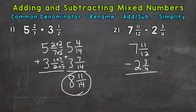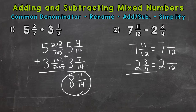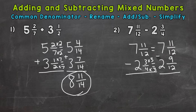Do we have a common denominator between our two fractions? Are we able to subtract right away? No. So we need to find a common denominator. The least common denominator between 12 and 4 is 12. So let's rename. We have 7 and how many twelfths, and 2 and how many twelfths. Well, 7 and 11 twelfths already has a denominator of 12, so we don't need to rename — let's transfer our 11 over. Now we do need to rename the 3 fourths. We know 4 times 3 is 12, so do the same thing to the top: 3 times 3 is 9. So 3 fourths is equivalent to 9 twelfths, and both fractions now have a common denominator.